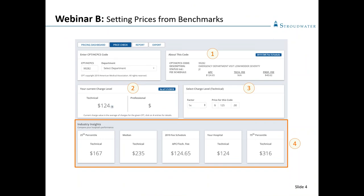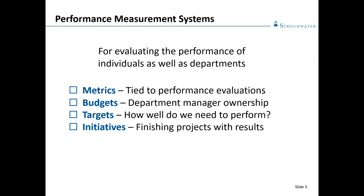The second webinar really focused on setting pricing to ensure we're not having those lost revenue opportunities — creating a defensible price list to benchmark appropriately and establish prices within an appropriate range. The primary focus of Webinar B was to say: what can we do around our price list to increase gross revenue for organizations as a whole?